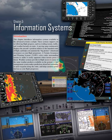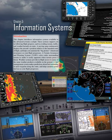A moving map continuously displays the aircraft's position relative to the intended route of flight, and helps you maintain the big picture and situational awareness as your flight progresses. A Terrain Awareness and Warning System, TAWS, color codes surrounding terrain to make it easily apparent when terrain poses a threat. Weather systems provide in-flight access to many of the same weather products available on the ground. A fuel management system makes predictions about fuel remaining at each waypoint along the route, and helps monitor actual fuel use as your flight progresses.